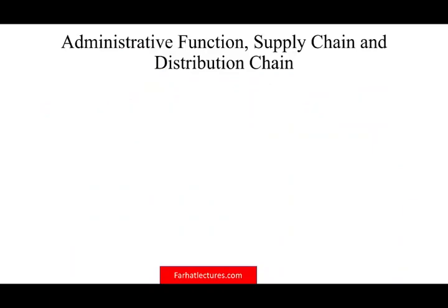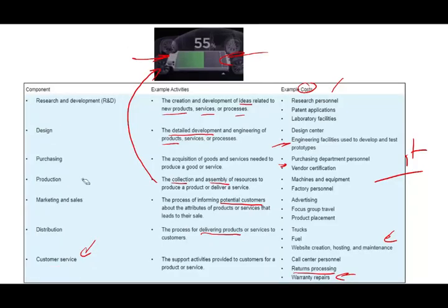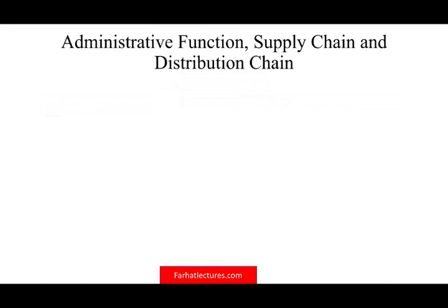Administrative functions such as HR and accounting are not part of the value chain itself — they are included in every business function of the value chain. For example, you need HR for purchasing and accounting records for production. They support every function but are not listed as a standalone value chain step. This is the value chain that creates value for the customer and for our product.